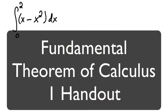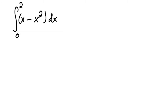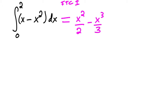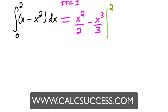We want to find the integral from 0 to 2 of x minus x squared. Using the Fundamental Theorem of Calculus Part 1, we find the antiderivative: x squared over 2 minus x cubed over 3, using the backwards power rule. Then the Fundamental Theorem of Calculus says plug in the top minus the bottom.